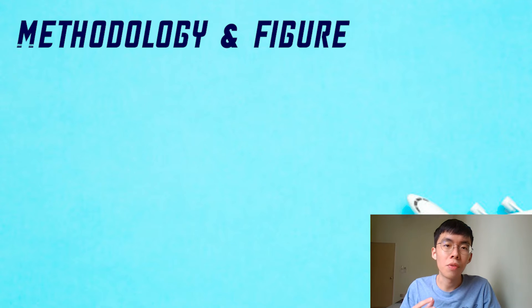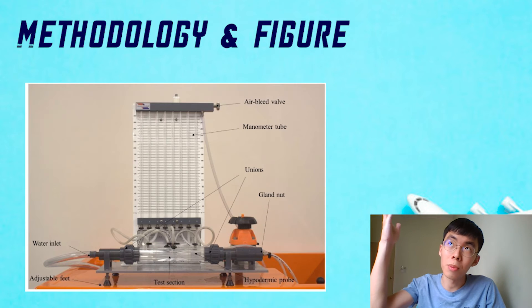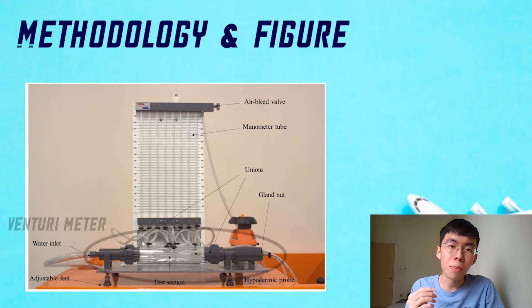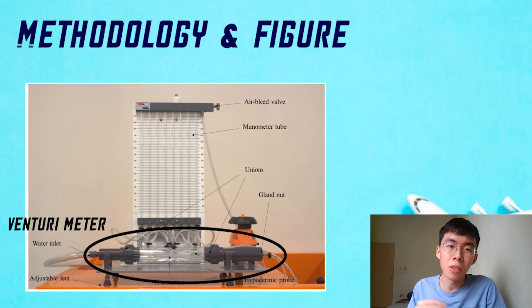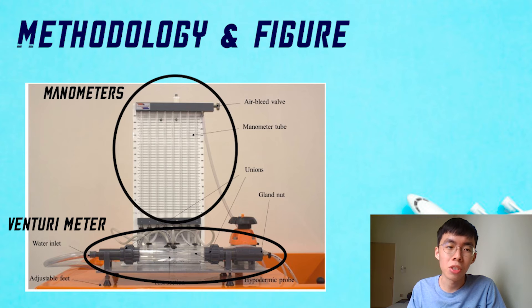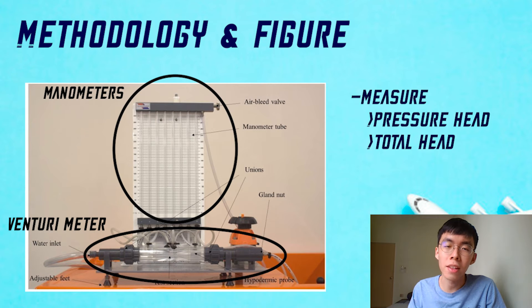Now, the methodology of this experiment involves the use of Bernoulli's apparatus test equipment, which is formed by connecting a taper duct or venturi meter to the manometers in order to measure the pressure head and total head in the fluid flow.